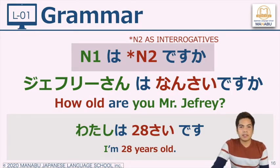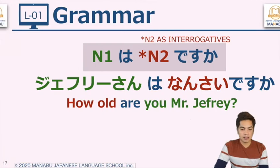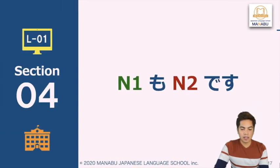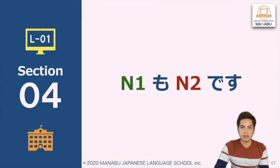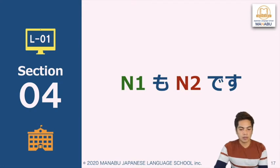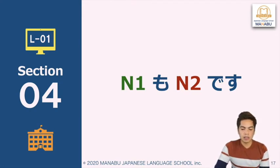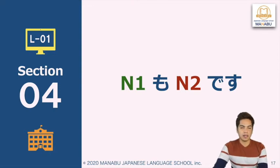Now let's proceed to our fourth grammar point: Noun 1 mo, Noun 2 desu. We will use the particle mo instead of the particle wa. Remember that mo is translated as the word 'also.'